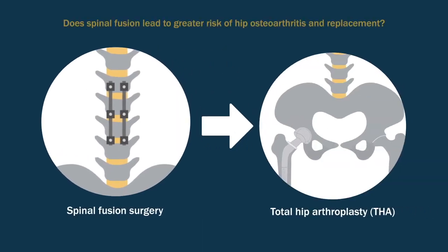Do these mechanical changes mean that spinal fusion surgery will lead to greater rates of hip osteoarthritis and hip joint replacement?